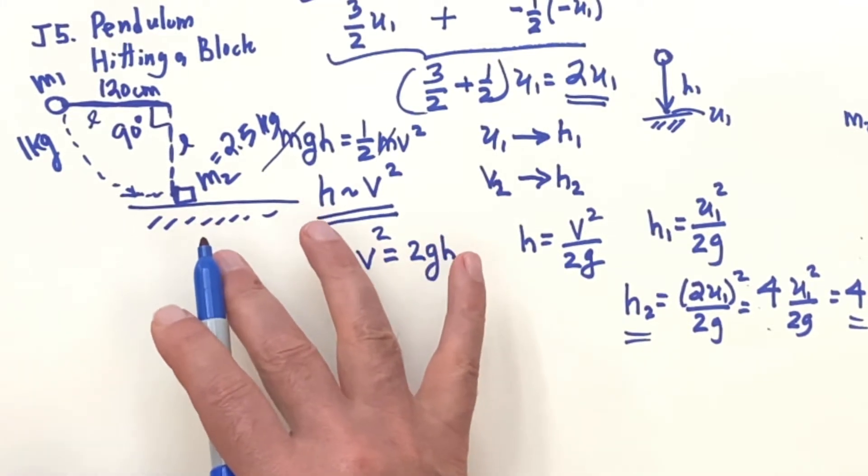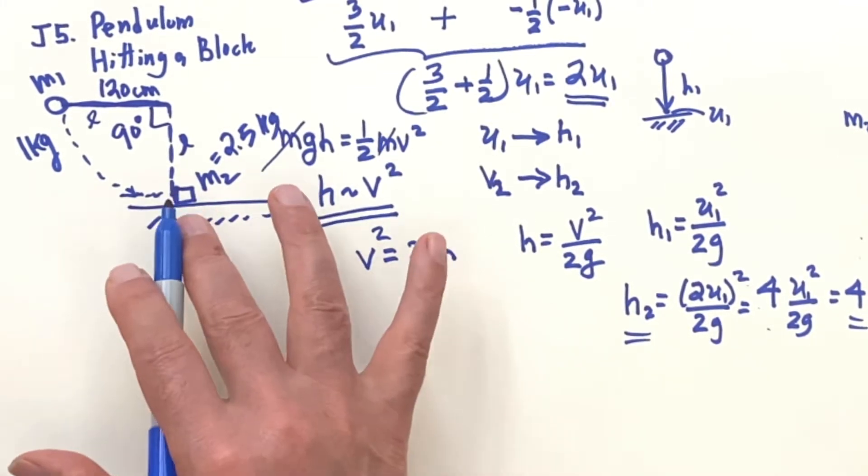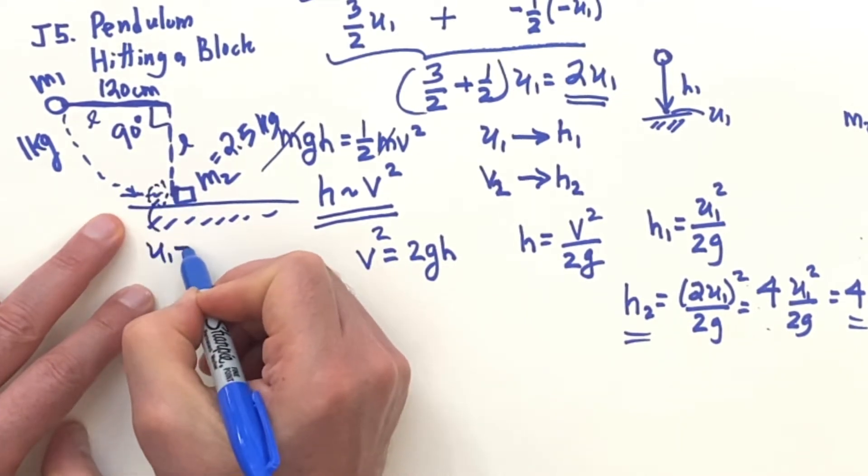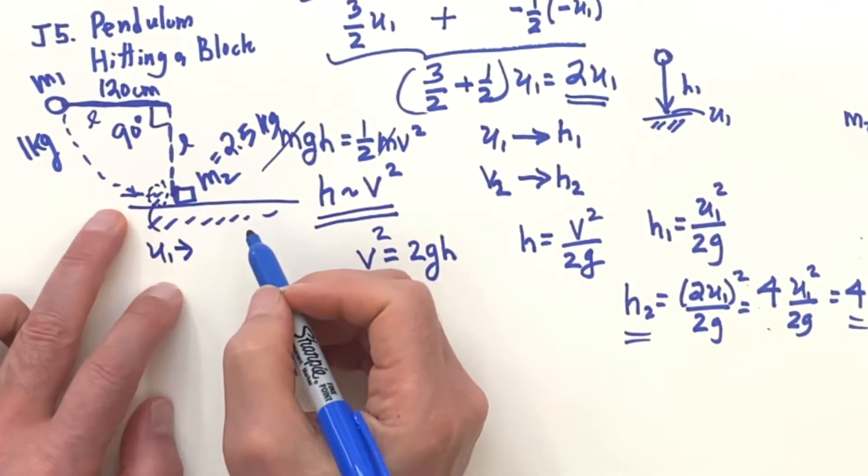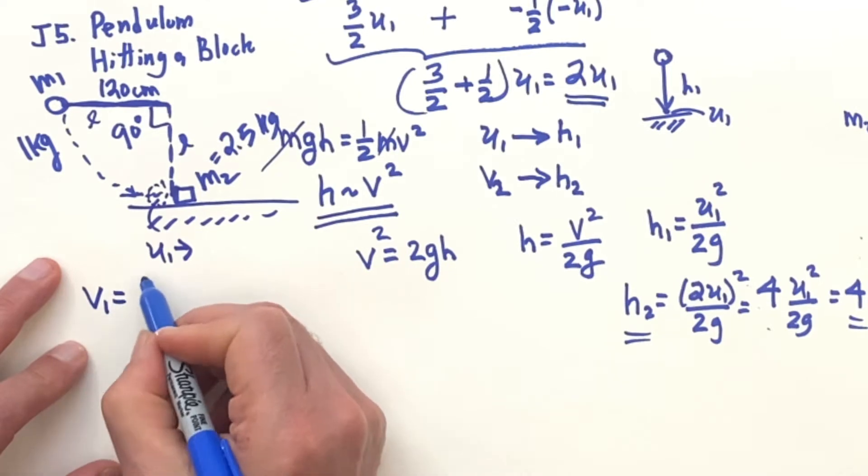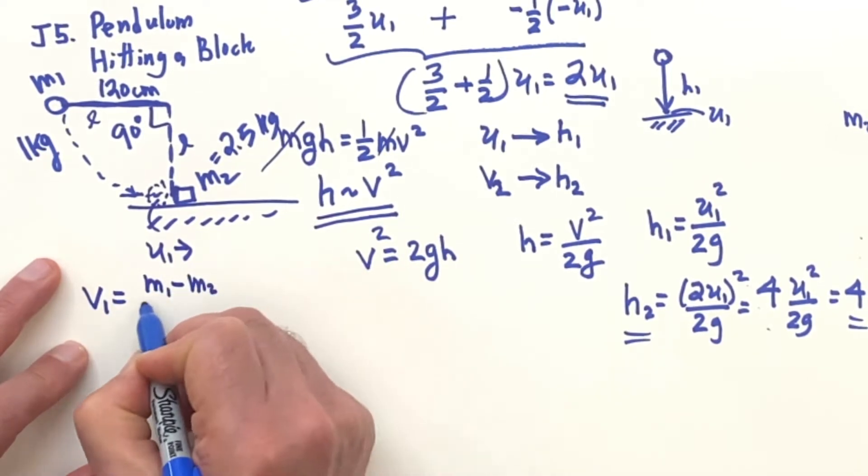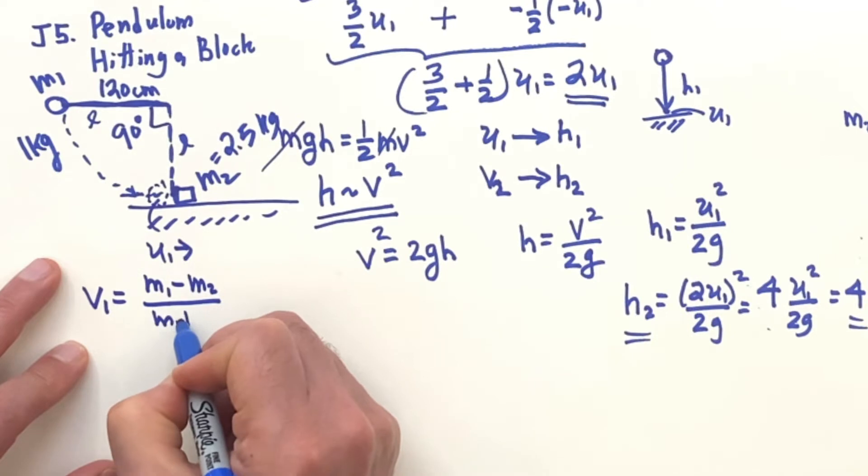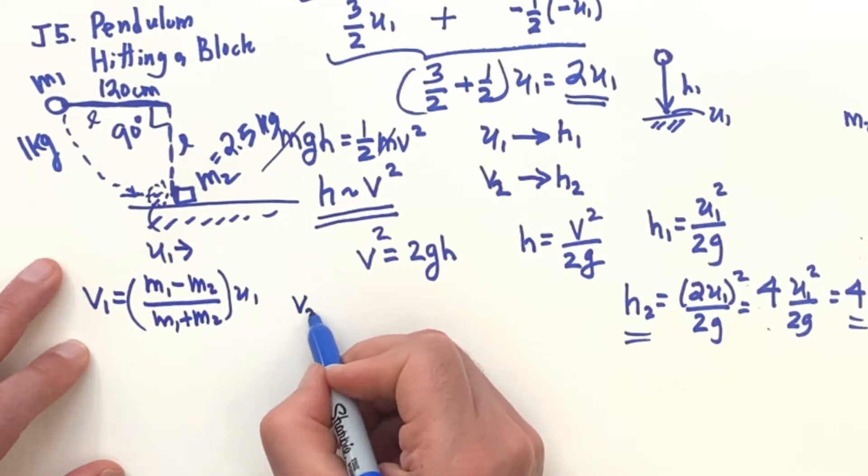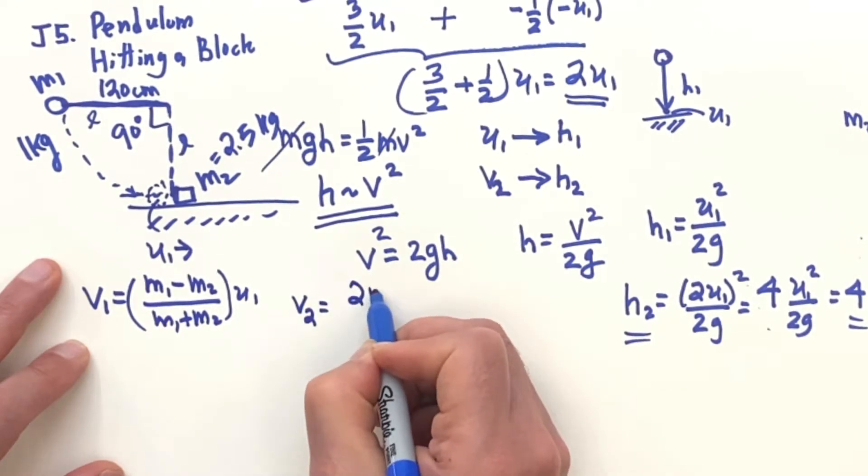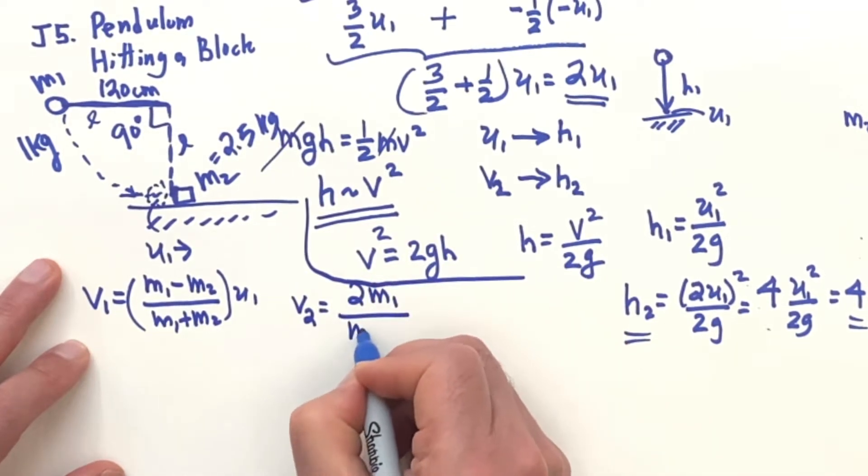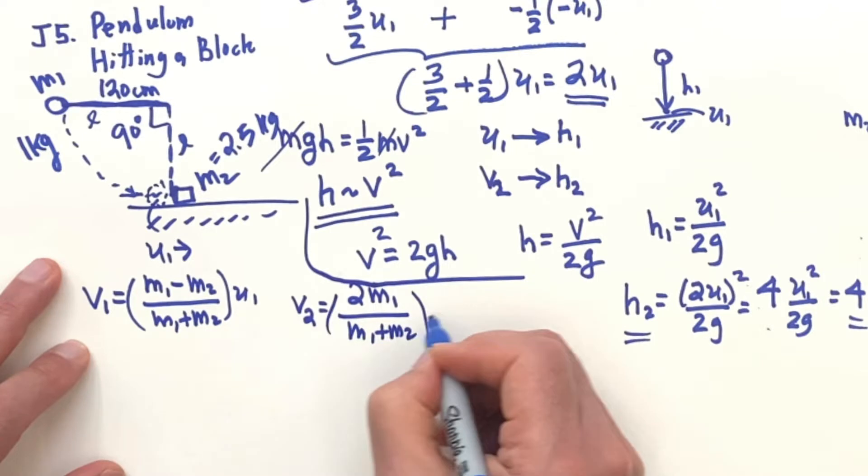So now we can use the formulas that we derive for the case where the second mass is at rest and the first mass is moving. So it's going to be down here, where this is U1 going that way. It's going to smack into this. And then what are the final velocities? Well, the formula for the final velocities that we derived, which we can look up. These do not need to be memorized. We have here for V1 and for V2, 2M1 over the sum times U1.